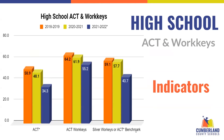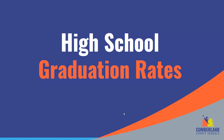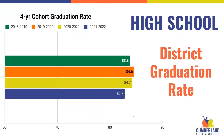Our high schools did experience a few decreases in other measures, one of which was in ACT performance. This drop, however, follows a significant change in the acceptable composite level. Prior to the 2021-22 school year, the marker for success was a composite score of 17. During the 2021-22 school year, that threshold was raised to a 19. The charts indicate those decreases. Graduation rates also saw a slight decrease — from 2021 to the 2021-22 school year, graduation rates dropped from 84.2% to 82.8%.